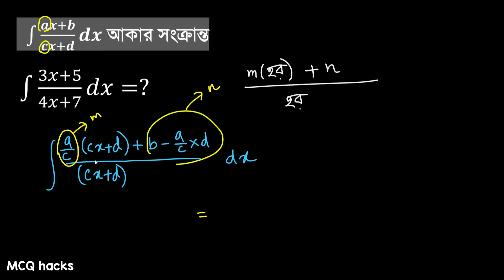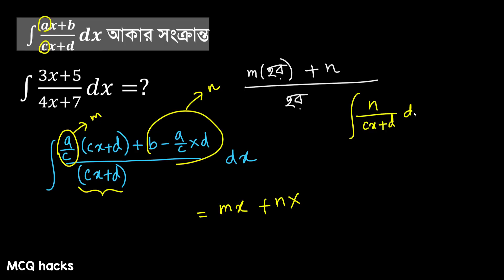Now integrating this is very easy. So our answer: I'll write directly — m value, then n value. So our answer: look, m times what goes — directly: I'll directly integrate. m will go out — what just remains is 1, so its integration is x. Plus n times integration of 1 by cx plus d: that's n into 1 by c, ln of cx plus d.